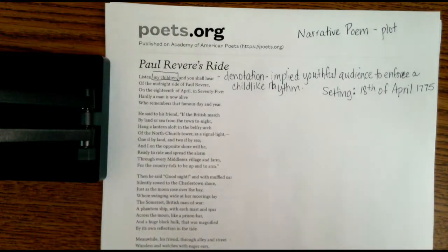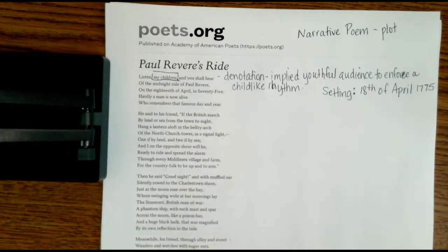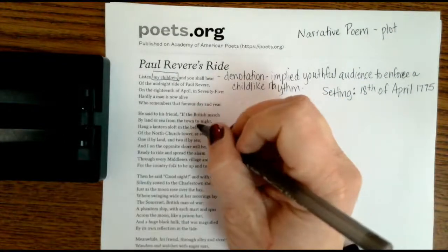He said to his friend, If the British mark by land or sea from the town tonight, Hang a lantern aloft in the belfry arch of the north church tower as a signal light. One if by land and two if by sea. And I on the opposite shore will be ready to ride and spread the alarm through every Middlesex village and farm, for the country folk to be up and to arm.